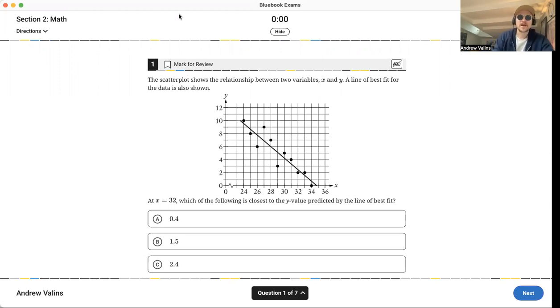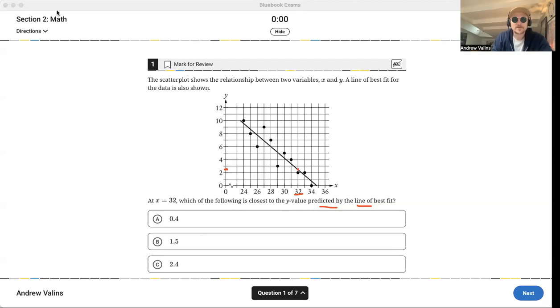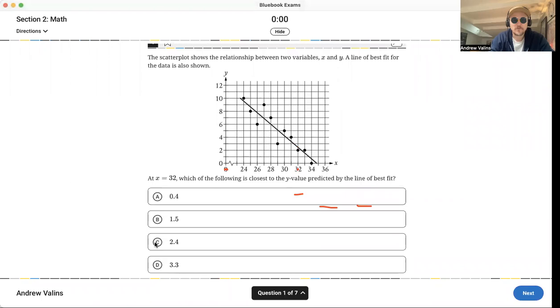Number one, the scatterplot shows the relationship between variables x and y aligned for best fit. If the data is shown at x equals 32, which of the following is the y predicted by the line of best fit? That means you've got to go to that line and see what the y value is, and it looks like it's right around there. Be careful, look at your scale, look at your units. This is about 2.5, so the closest answer would be 2.4. Click that, move on.